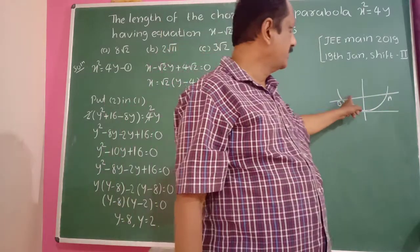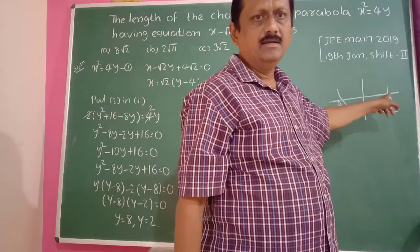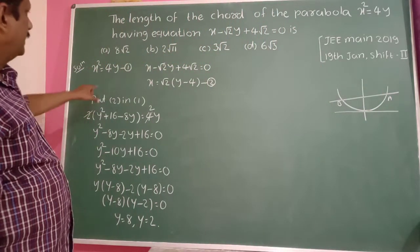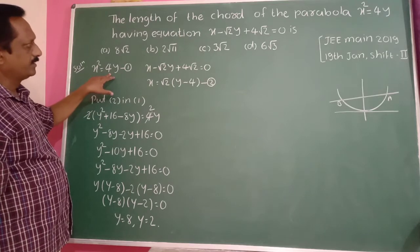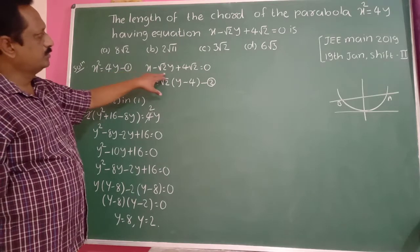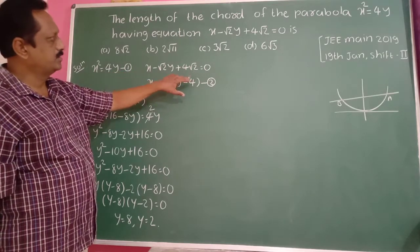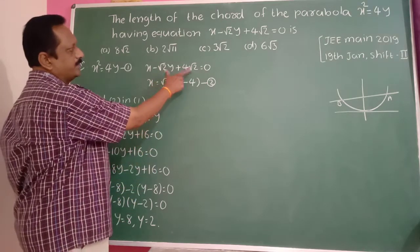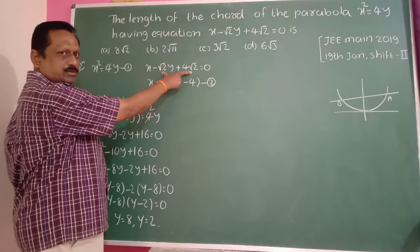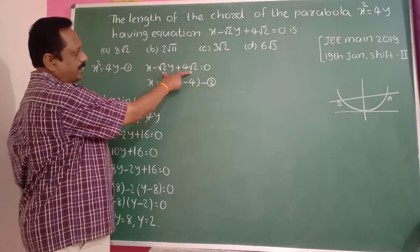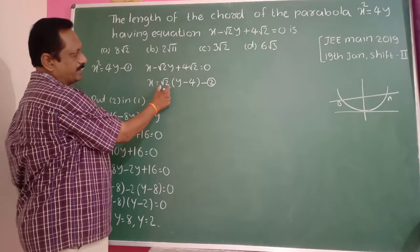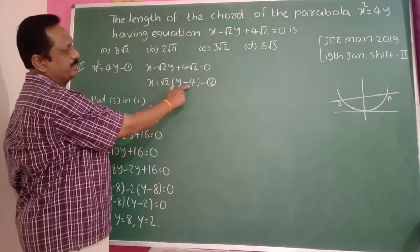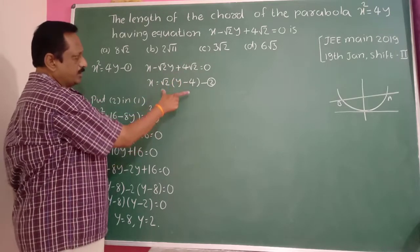Then you can use the distance formula to find the length. So x² = 4y is the parabola and x minus √2·y plus 4√2 equals 0. Take both terms to the right-hand side, take √2 as a common factor, then minus y becomes plus y and plus 4 becomes minus 4 in the bracket.